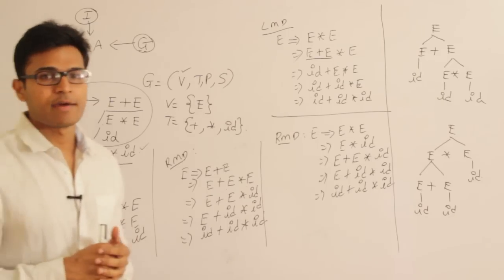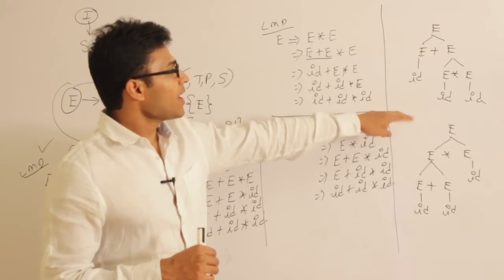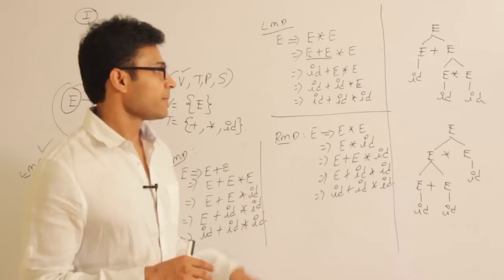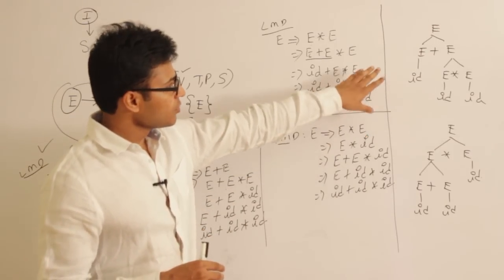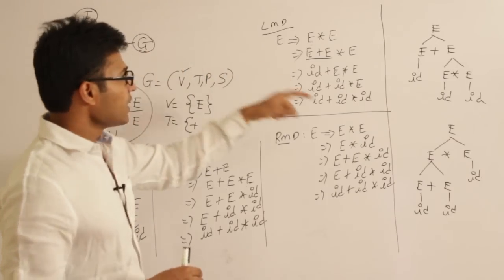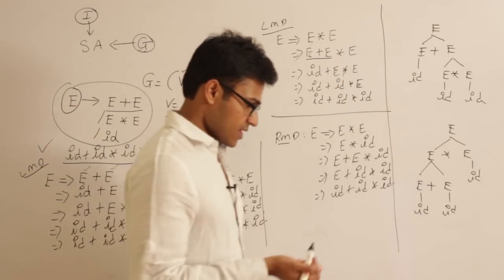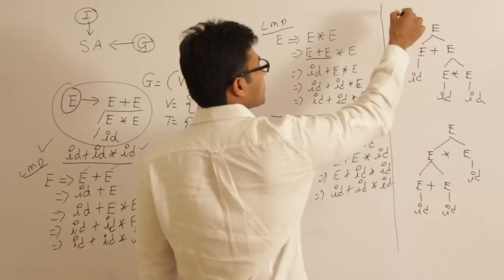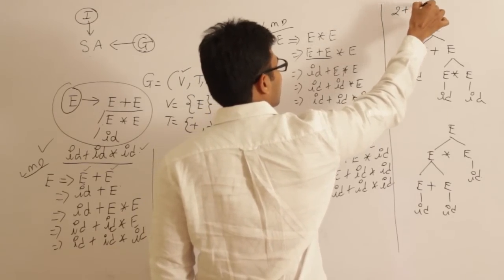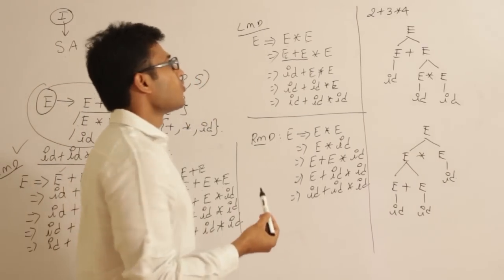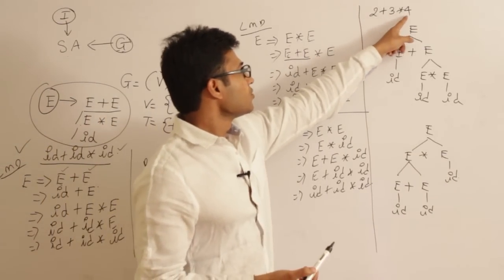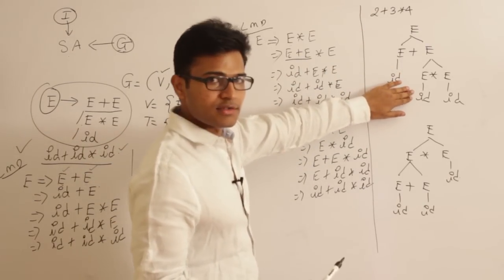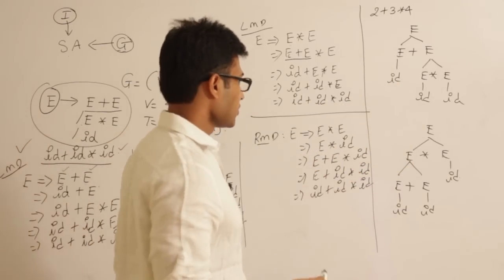So for this grammar, for the string id + id * id, we got more than one LMD, more than one RMD, and more than one parse tree. If we get more than one parse tree — or more than one LMD or RMD — we say the grammar is ambiguous. When a parser encounters ambiguity, it gets confused about which parse tree to use.